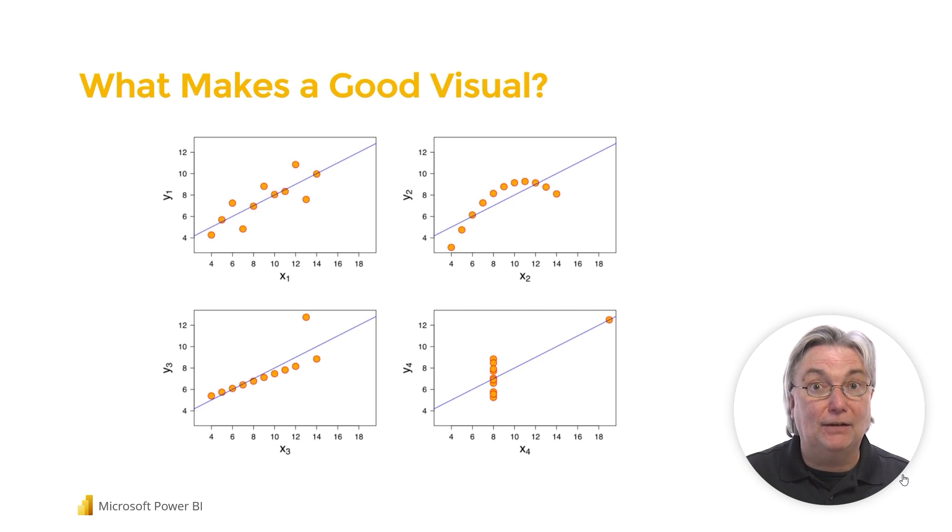Francis Anscombe was a statistician back in the early 1970s, and he was often ridiculed by his peers for emphasizing the graphing or the charting of data, more so than the serious number crunching. Because back in his day, numbers were considered rigorous and strict, and graphing was considered loose and not terribly exact. Well, he knew that they were wrong, and so he set out to prove it.